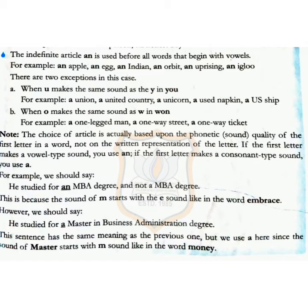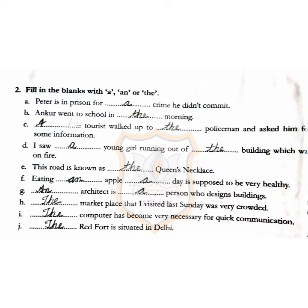Exercise 2: Fill in the blanks with A, An, or The. First: 'Peter is in prison for a crime he didn't commit.' Next: 'Ankur went to school in the morning.' Next: 'A tourist walked up to the policeman and asked him for some information.' Next: 'I saw a young girl running out of the building which was on fire.' Next: 'The road is known as the Queen's Necklace.'